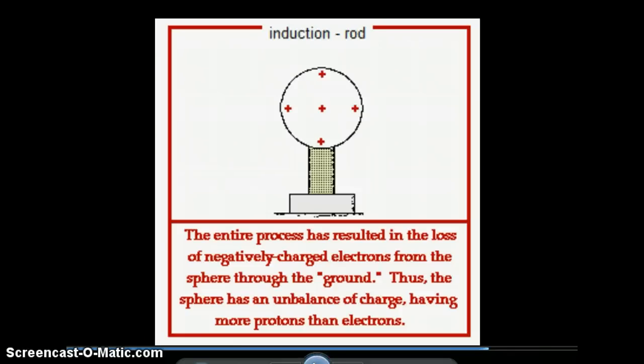Any conductor, the charges will tend to stay only on the surface, they will not go inside the conductor. That entire process has resulted in the loss of the negative charged electrons, leaving positive charge behind. We didn't move protons, we just got rid of electrons to leave the positive charges behind.